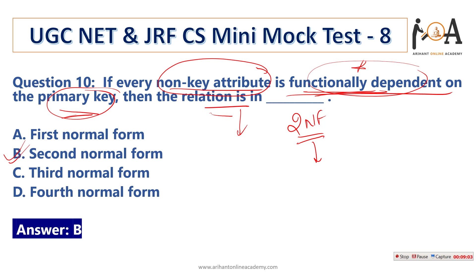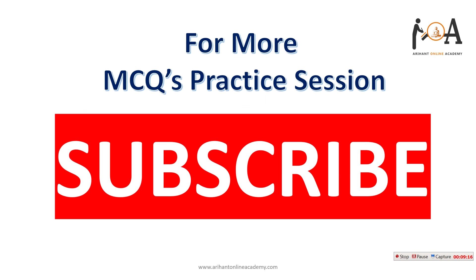Question number 10: if every non-key attribute is functionally dependent on the primary key, then the relation is in second normal form (2NF). This is directly the definition of 2NF and is a previous-year UGC NET question. I hope all these questions are very clear to you. If you have any doubts or queries, just comment and I will try to solve them as soon as possible. Have a very nice day!